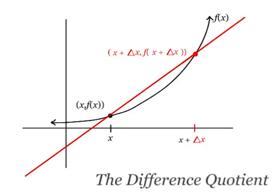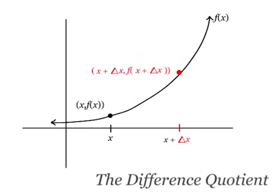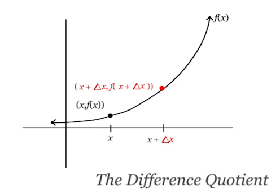Let's look at that graph again. What happens if I were to make delta x smaller? In other words, my second point will be closer to x than it was before.